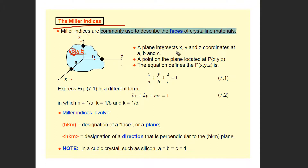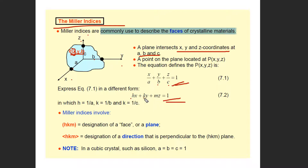A plane intersects the x, y, z coordinates at points a, b, c. We use the equation x/a + y/b + z/c. We substitute h, k, m — where 1/a, 1/b, and 1/c correspond to h, k, m respectively. We use this equation for Miller indices.